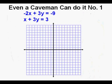Here is the first system of equations Og will solve today: negative 2x plus 3y equals negative 9, and x plus 3y equals 3.